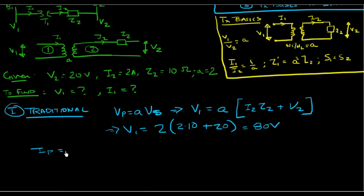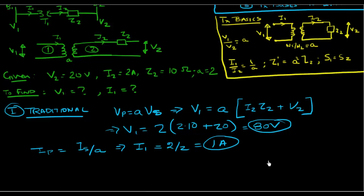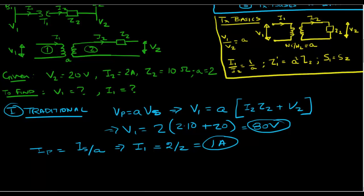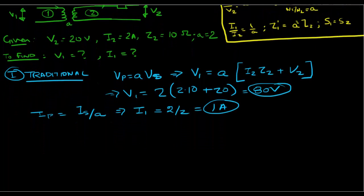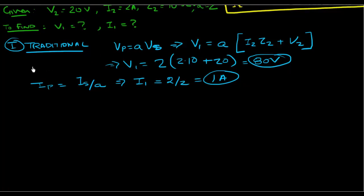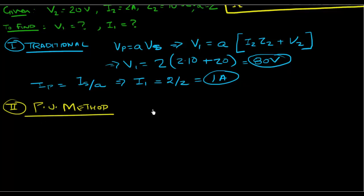The primary current I1 = I2 / a = 2 amps / 2 = 1 amp. That is what we get using the traditional method. For just one transformer it is simple, but with a complex circuit with many transformers and voltage levels, accounting for the turns ratio everywhere becomes a nightmare.